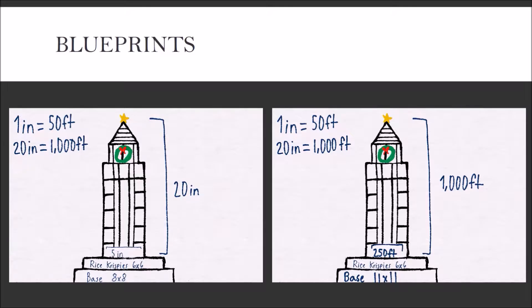The original blueprint has the building standing at 20 inches. Going along with a real-life building, it would be a thousand feet in real life, which would have the scale be one inch equals fifty feet. The hotel building is actually eighteen inches.